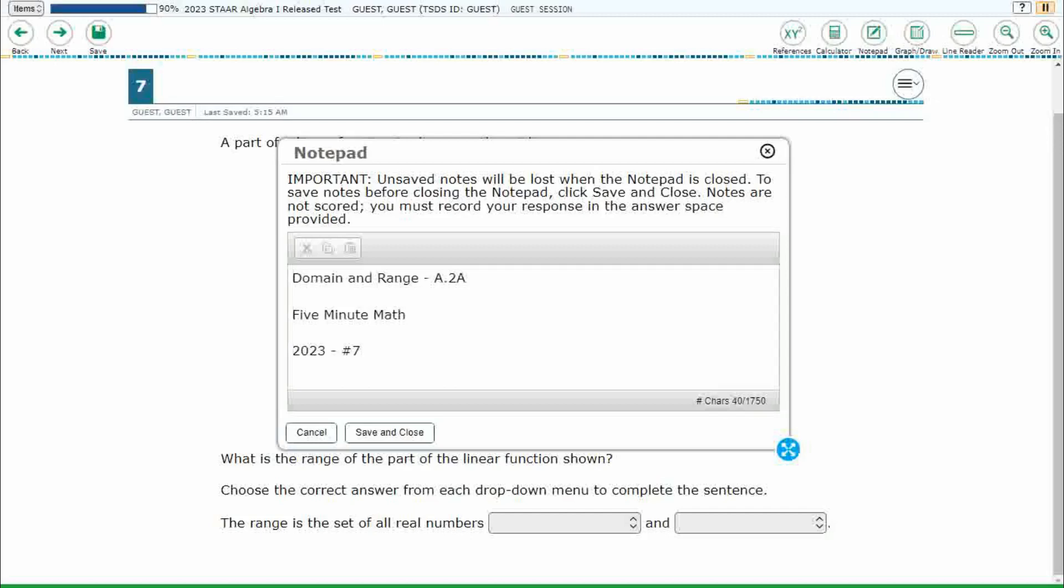Hello and welcome to 5-Minute Math. Today we are looking at the Algebra 1 concept of Domain and Range. This is standard A.2a in the great state of Texas, and we are using item number 7 of the 2023 released STAAR test.